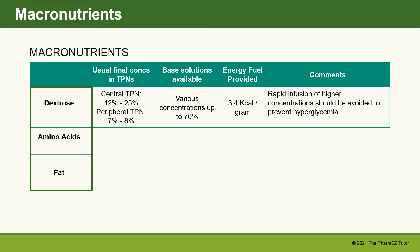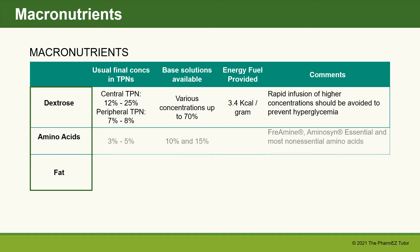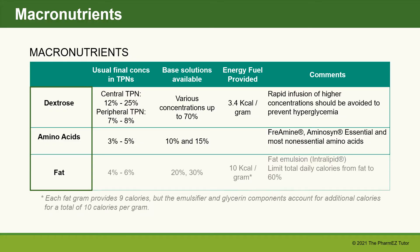For dextrose, the usual final concentration in central TPNs is 12–25%, and in peripheral TPNs 7–8%. Base solutions up to 70% are available. The energy provided is 3.4 calories per gram. For amino acids, the usual final concentration ranges from 3 to 5%, with base solutions of 10 and 15% available. Protein is not considered a caloric source, and goes by trade names freeamine and aminosin. The usual final fat concentration is 4–6%, with base solutions of 20 and 30% available. Fat provides 10 calories per gram — 9 calories per gram of fat, plus additional calories from the emulsifier and glycerin. The most common fat emulsion is intralipid.